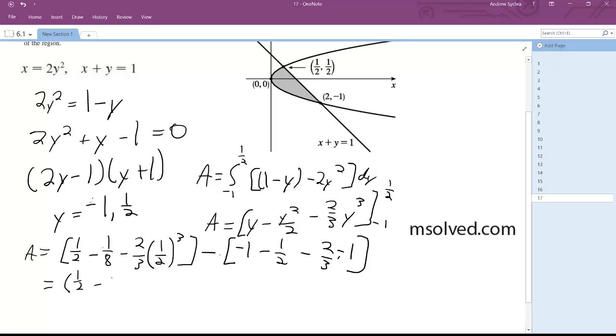One half minus one eighth minus one twelfth minus negative one minus one and a half plus two thirds is equal to seven twenty-fourths plus five sixths is equal to 27 over 24, which reduces down to nine over eight. That's it.